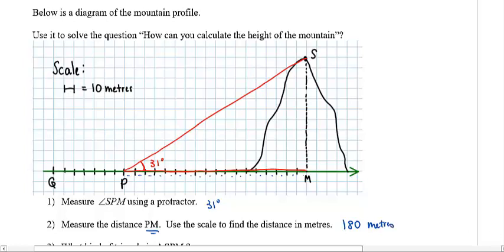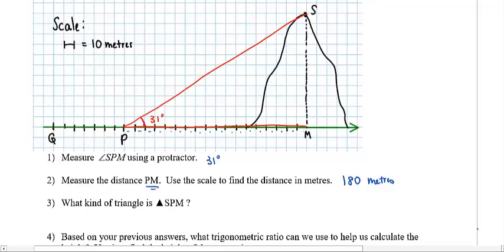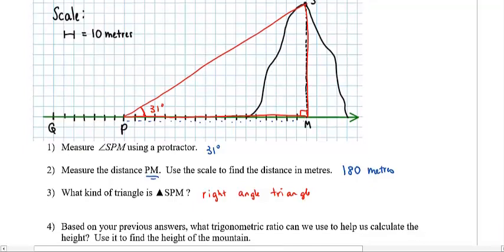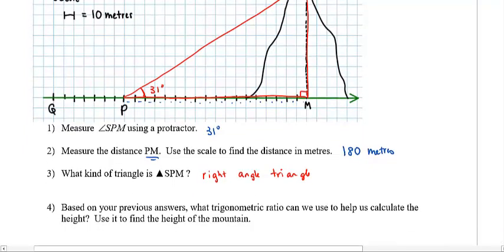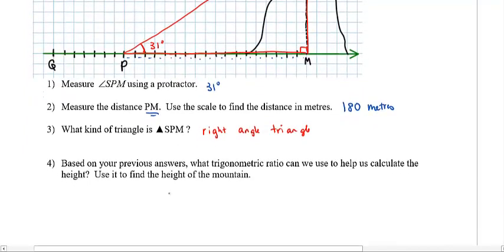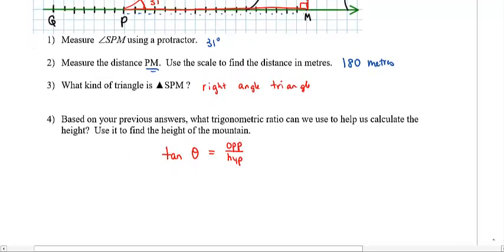Now with this information, ask yourself what kind of triangle is SPM? I hope you can say this is a right angle triangle. If it is, guess what we can use. What trig ratio can help us calculate the height? Yeah, it's the one we've been using for the last couple of lessons, the tangent ratio. Tangent theta equals the length of the opposite divided by the length of the hypotenuse. Now use this to find the height of the mountain.